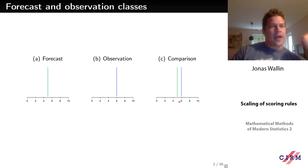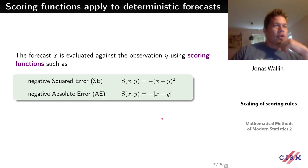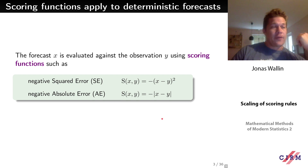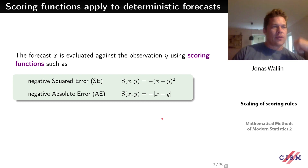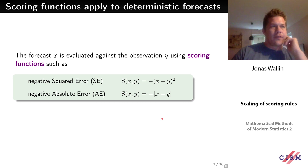We will get different rankings if we use different forecasts. The common squared error is the classical scoring function, or alternatively the absolute error. I use a negative sign here just to make sure that the largest value is the best. Depending on which scoring function you use, you will get different rankings of different forecasts.